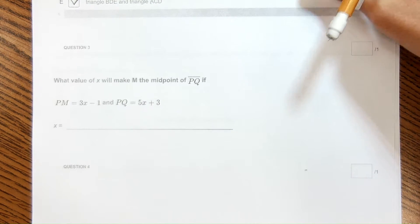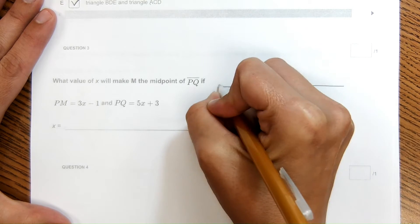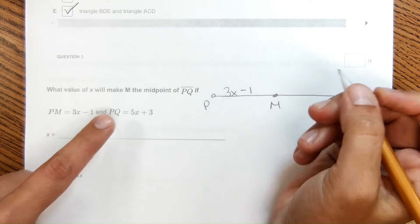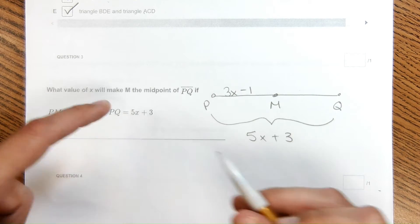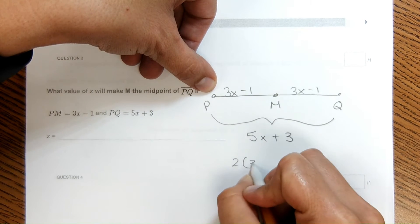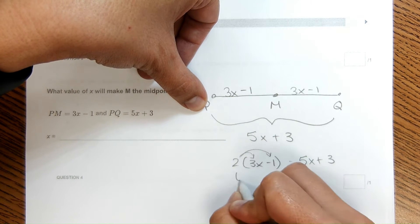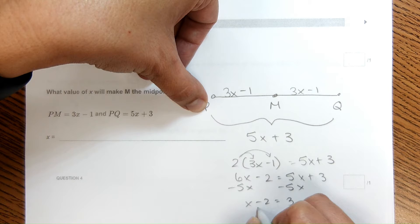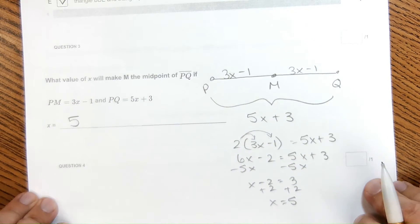For this one, it said what value of X will make M the midpoint of PQ? The best way to do this is to draw the segment. M is the midpoint of PQ. Then I can label the segment. PM is 3X minus 1, PQ is 5X plus 3. It would be tempting at first to set these equal, but that's not what is happening here. If this is the midpoint, then this is 3X minus 1 as well. So essentially, 2 times 3X minus 1 equals the whole length 5X plus 3. Then we can solve. You distribute here, 6X minus 2 equals 5X plus 3, and I get X equals 5.